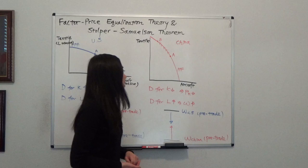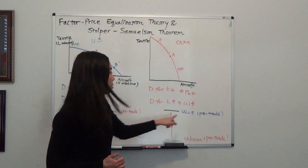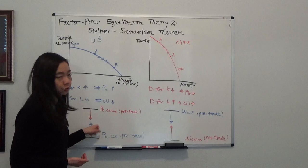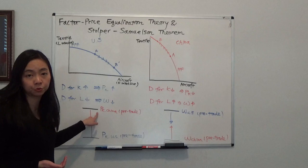The Stolper-Samuelson theorem tells you that there are winners and losers in trade. For the U.S., the losers from trade will be unskilled workers because their wage goes down, and the winners of trade are the capital owners — you can see the price of capital goes up, so capital owners are winning from trade. For China, the losers of trade are the capital owners because the price of capital goes down, and the winners of trade will be their unskilled workers. That is the Stolper-Samuelson theorem.